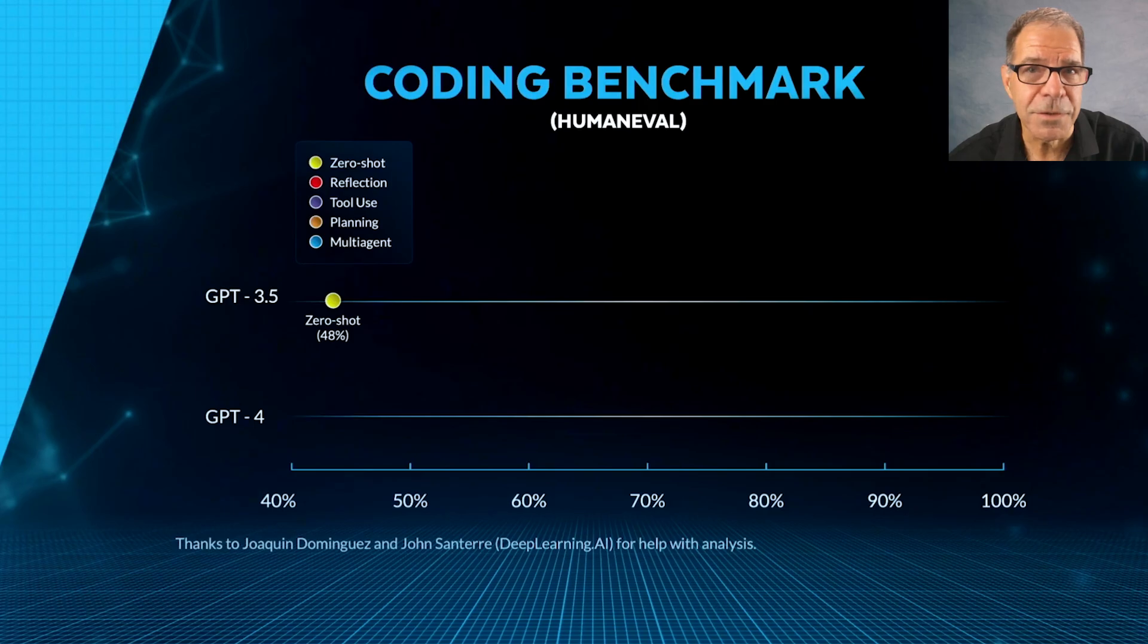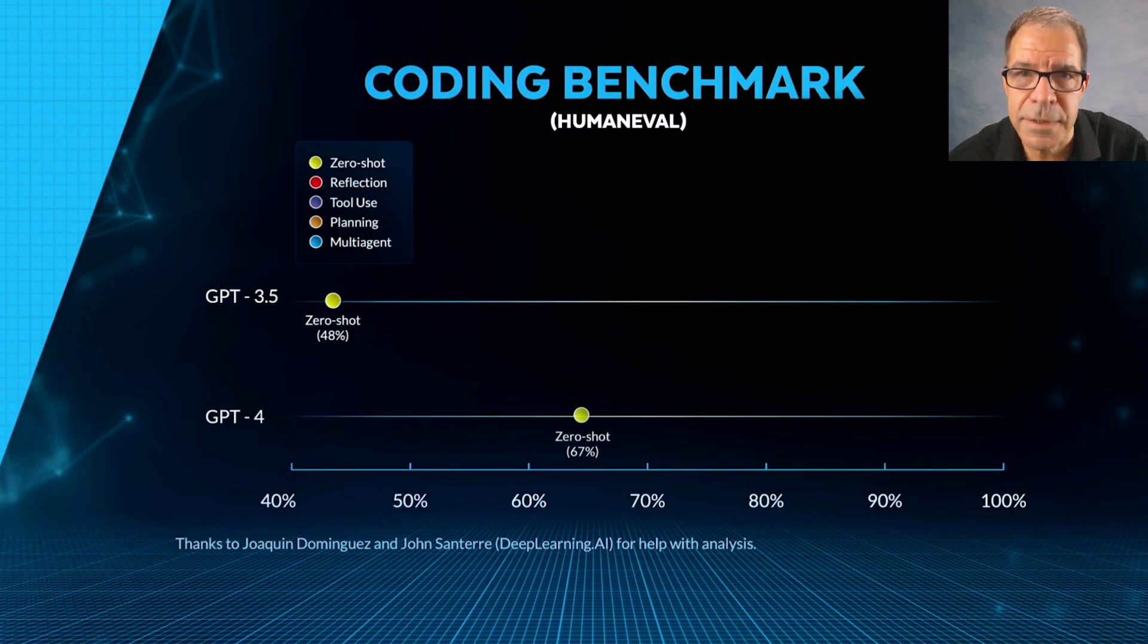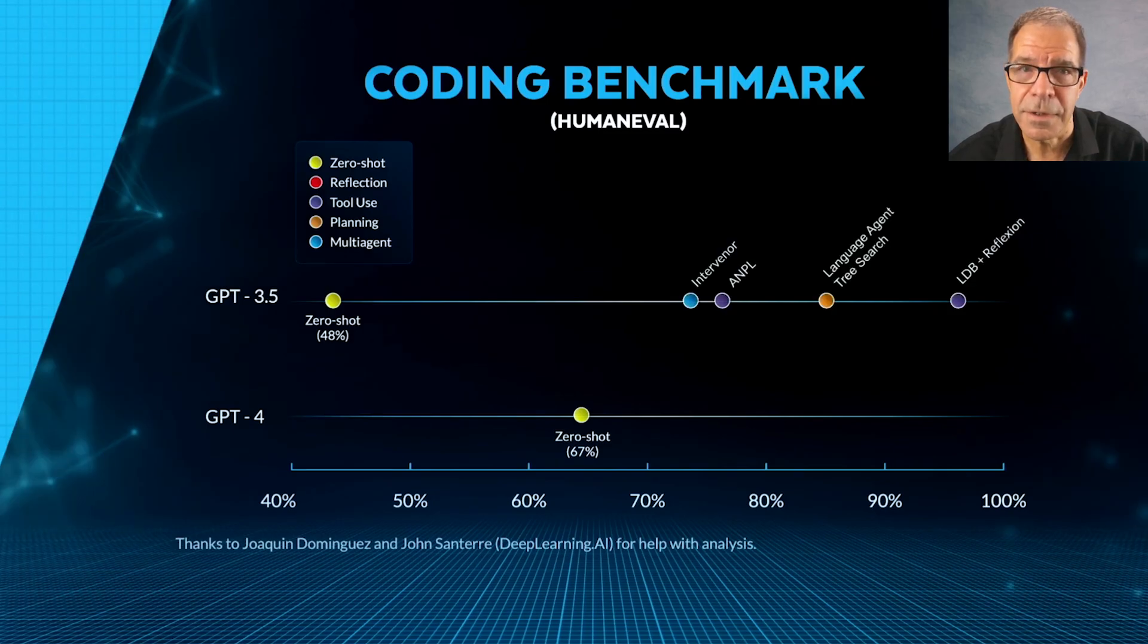Next, they tested GPT-4, which achieved 67%, as you can see here. But even the impressive results of GPT-4 were dwarfed by GPT-3.5 itself, provided that the model deployed agentic workflows, as you can see here.